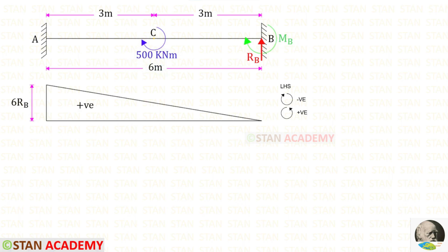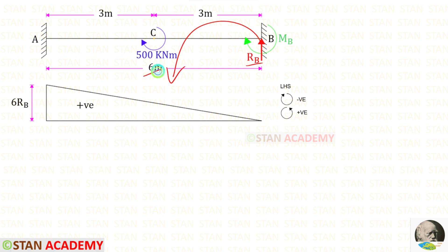We have to follow the left hand side rule: clockwise will be negative and anti-clockwise will be positive. First let us find the moment due to RB. RB is acting in the anti-clockwise direction, so it will be positive and the distance is 6, giving us 6RB. We will get a triangular shaped diagram.